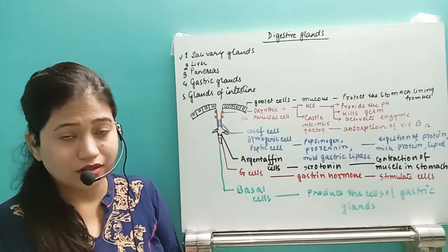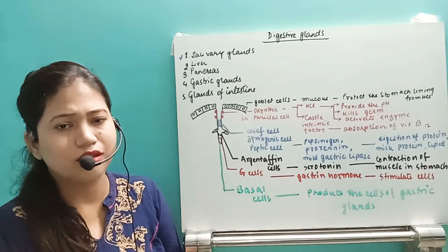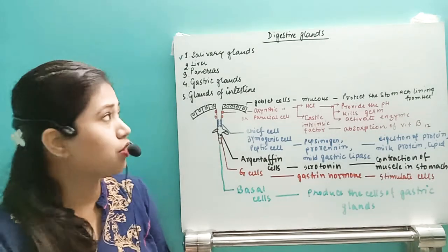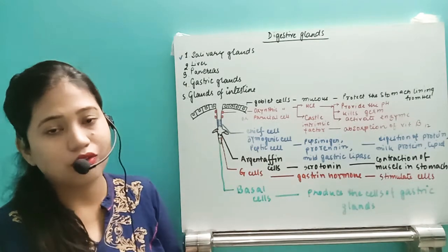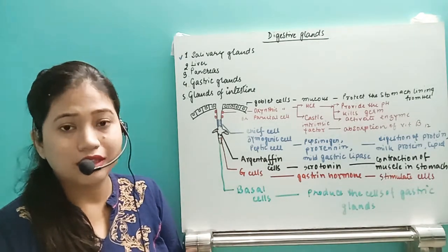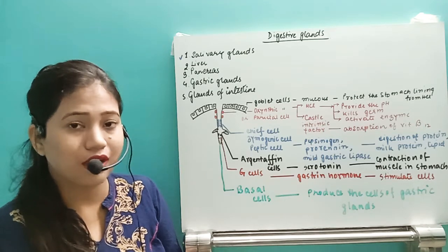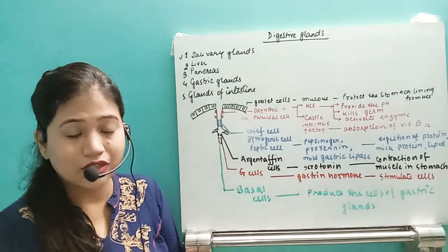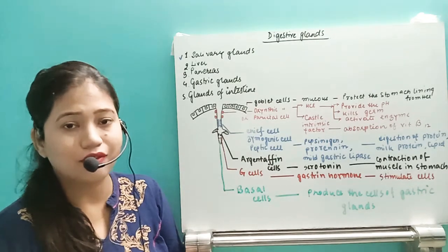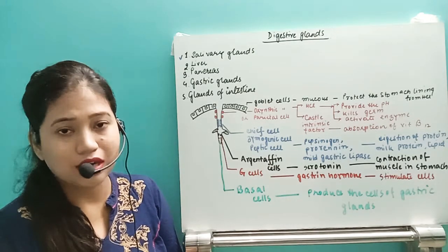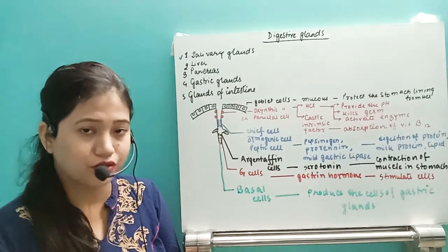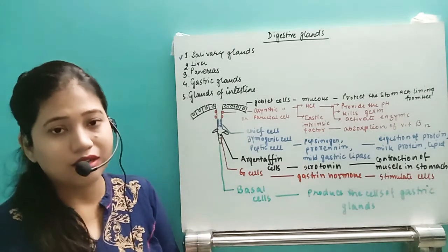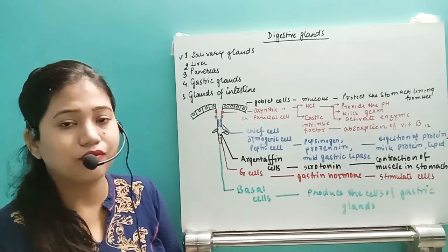All three glands together release saliva, which contains maximum water and a little amount of mucus. The names of the ducts, their secretion, the pH, and the function of salivary amylase — all these are very important. After discussing the salivary glands, we now move to the other glands.